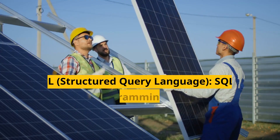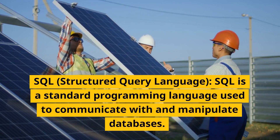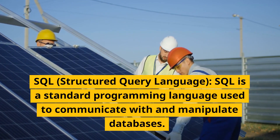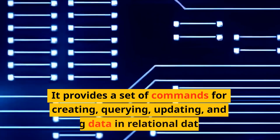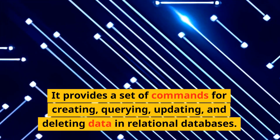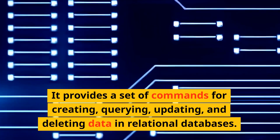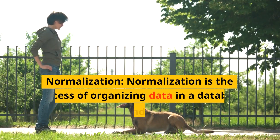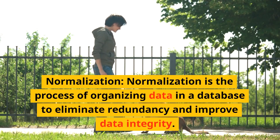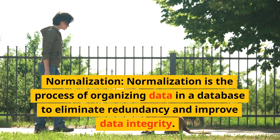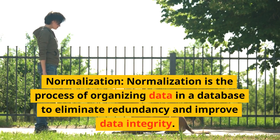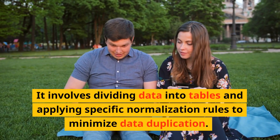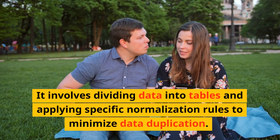3. SQL (Structured Query Language): SQL is a standard programming language used to communicate with and manipulate databases. It provides a set of commands for creating, querying, updating, and deleting data in relational databases. 4. Normalization: Normalization is the process of organizing data in a database to eliminate redundancy and improve data integrity. It involves dividing data into tables and applying specific normalization rules to minimize data duplication.